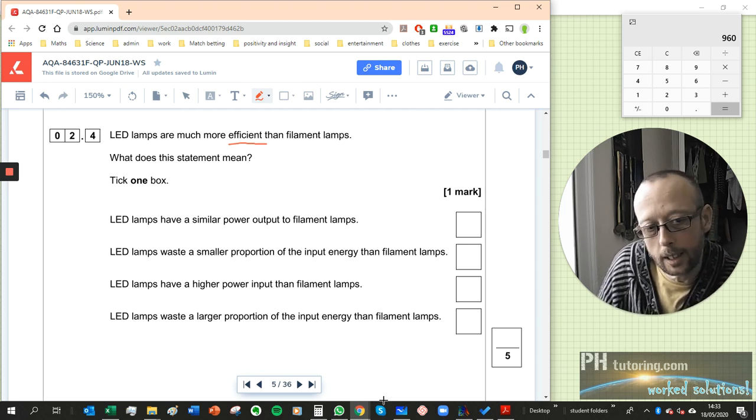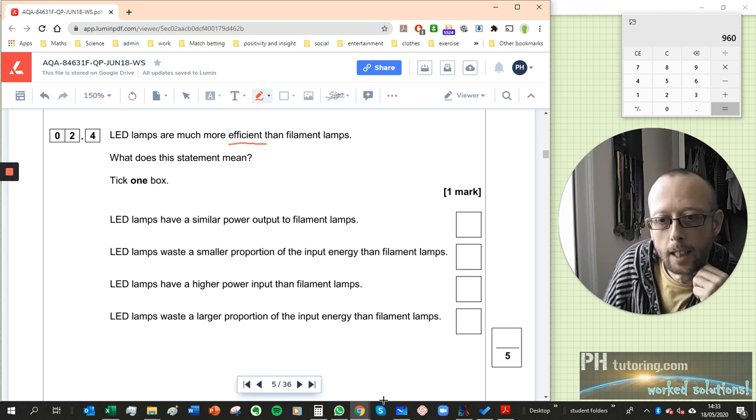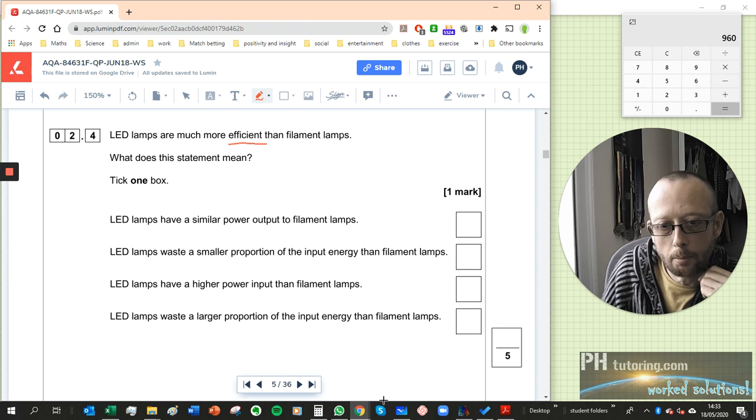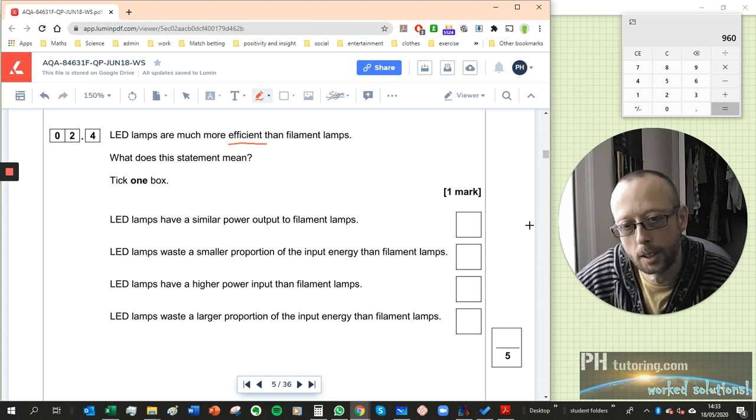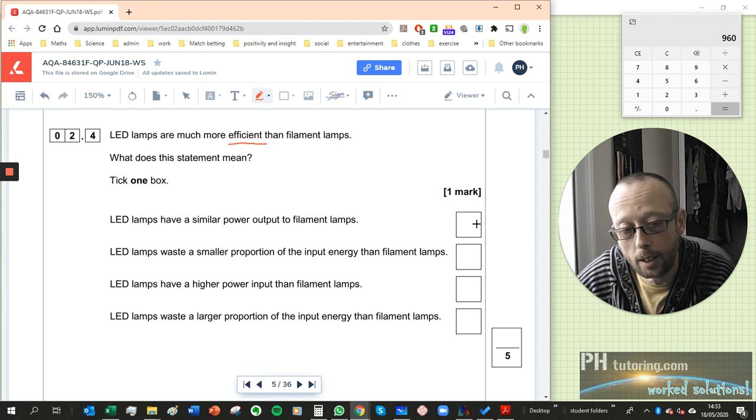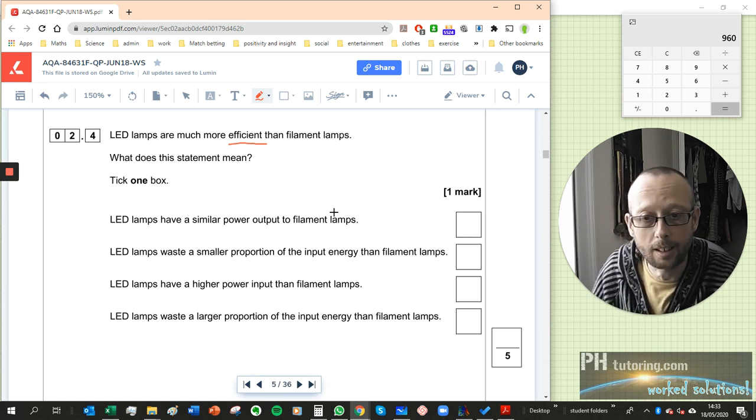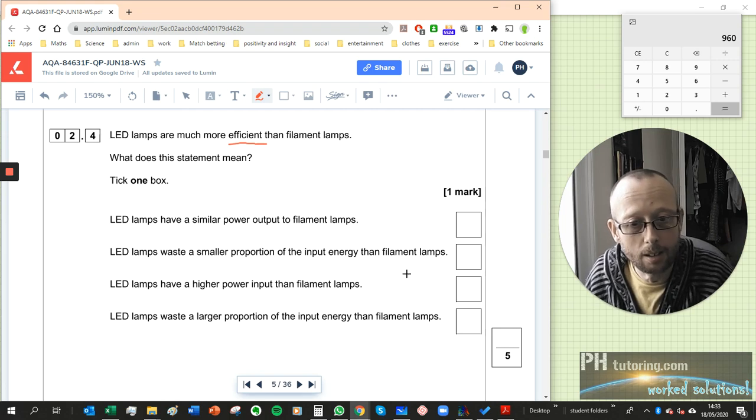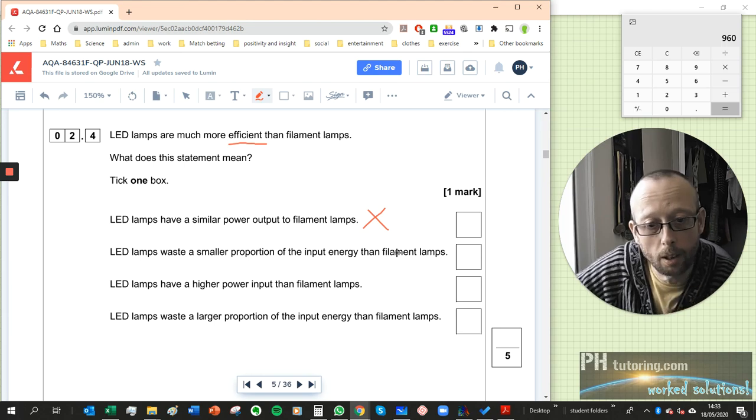That's what efficient means: more of the energy that I give it gets used in the way that I want it to be used. So which one seems to fit that description, fit that definition? LED lamps waste a smaller proportion of the input energy than filament lamps. And also start at the top: LED lamps have a similar output to filament lamps. Well it may do, it may not, in fact I think it does, but whether or not it's true is different to what the question is. The question is asking you which one does that mean. It does not mean that. Does not mean that LED lamps waste a smaller proportion of the input energy than filament... yeah that's what it's saying.